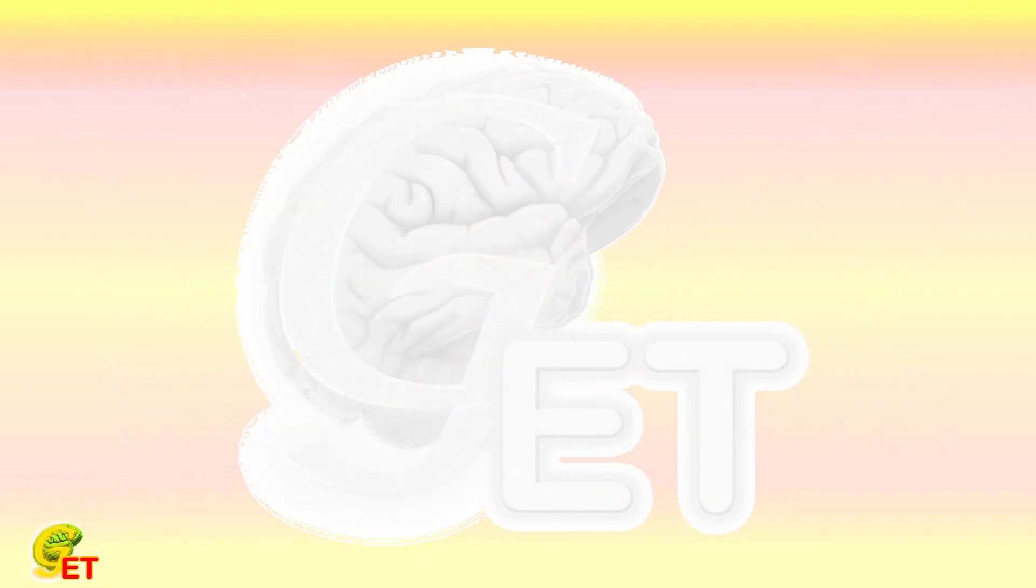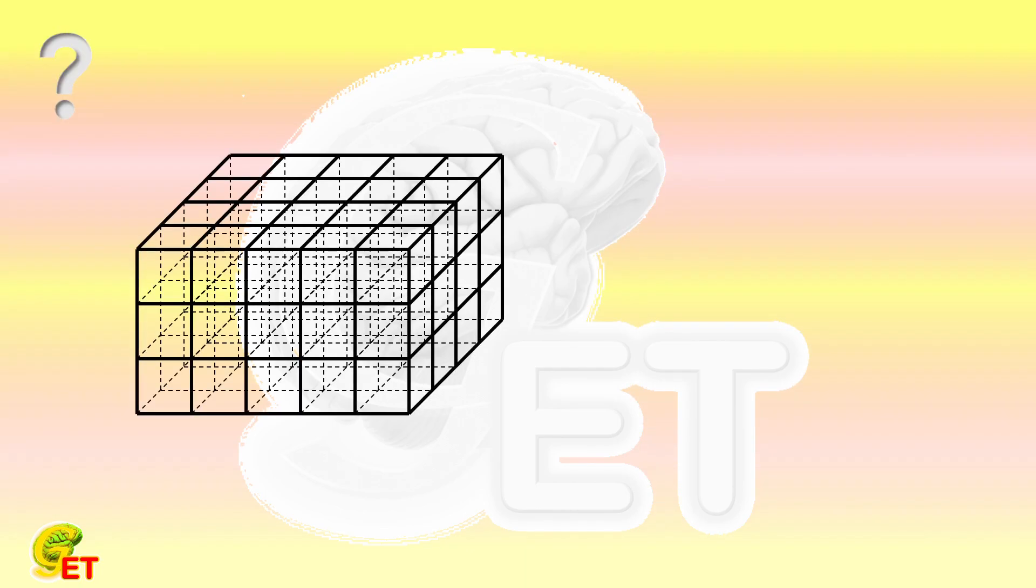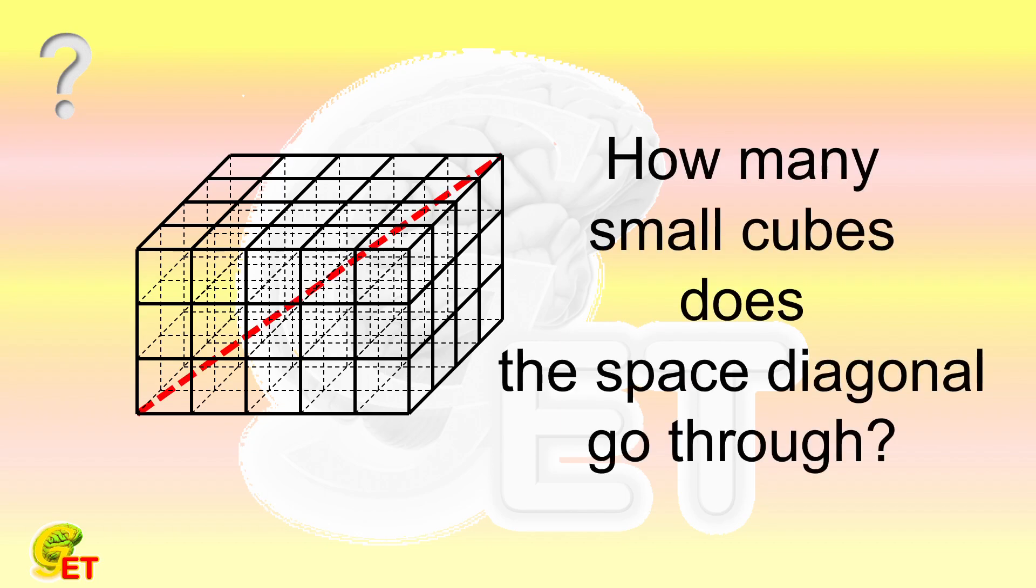Hello, my friends. Thank you very much for subscribing to our channel. By using 3×4×5, a total of 60 small cubes, we build a large cuboid. How many small cubes does the space diagonal of the big cuboid go through?